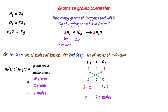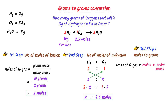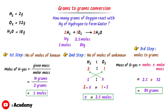Now I convert 2.5 moles of oxygen gas to grams. In the third step, mass = number of moles × molar mass = 2.5 × 32 = 80 grams of oxygen gas. Therefore, 10 grams of hydrogen gas react with 80 grams of oxygen gas to produce H₂O.